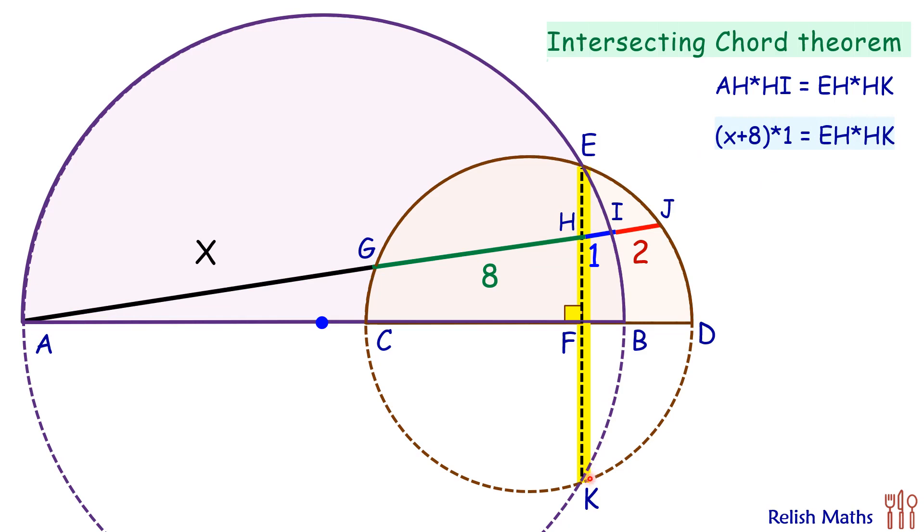Now this EK is also a chord in the brown circle. So let's apply the intersecting chord theorem in the brown circle, taking the second chord as GJ. Here these two chords are intersecting at point H, so we can say GH times HJ is EH times HK. GH is 8 centimeter, HJ is 3 centimeter, so 8 times 3 is EH times HK.